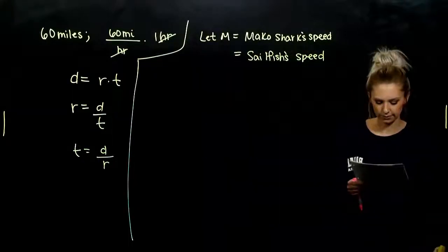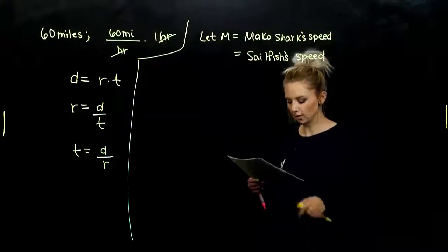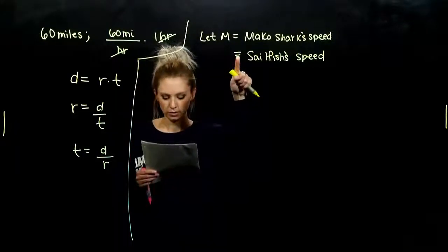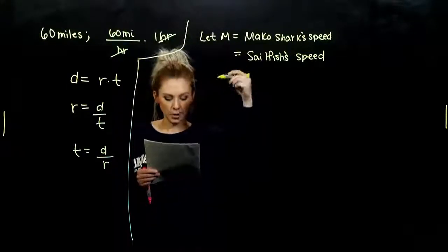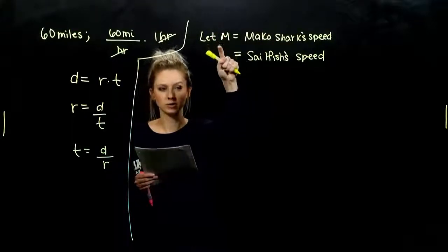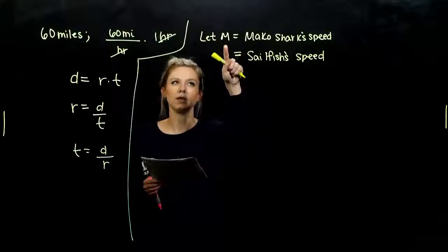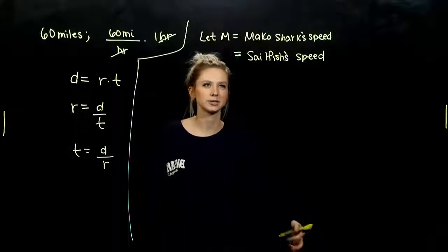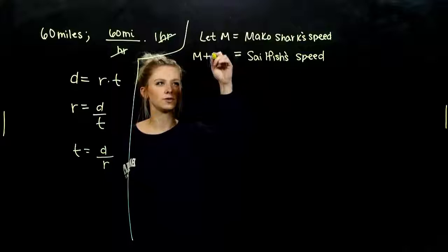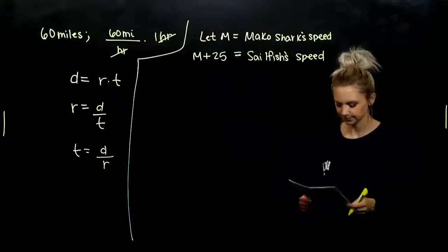So let's go back to that paragraph. I'll read that third line to you. The top speed recorded for a sailfish is, or is equal to, approximately 25 miles per hour faster than the mako. So the sailfish is 25 miles per hour faster than the mako. So how can we represent that as an expression? However fast the mako's going, my sailfish is going 25 more than that, 25 faster.